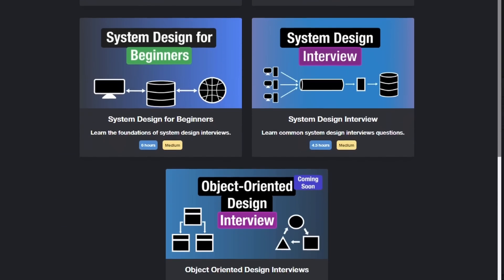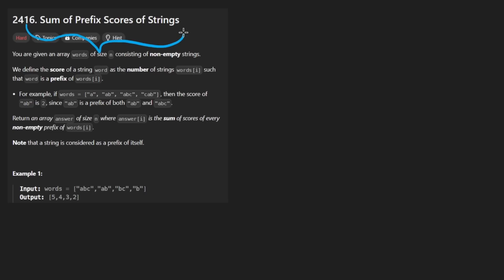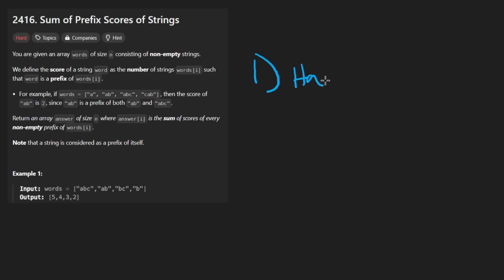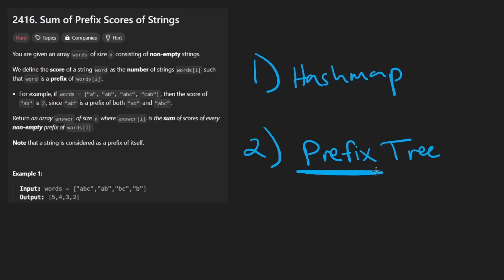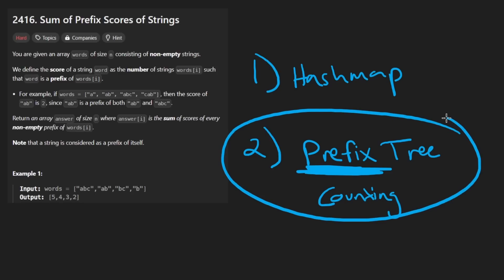Hey everyone, welcome back. Today let's solve the problem 'Sum of Prefix Scores of Strings.' This is a hard problem, but I think it's reasonable. I'll show you two solutions: one related to HashMap counting, and a second related to the data structure commonly called a trie, which I prefer to call a prefix tree because that's literally what it is — it's all about prefixes.